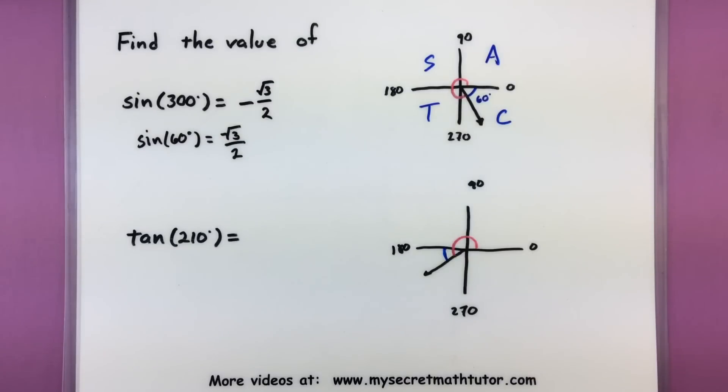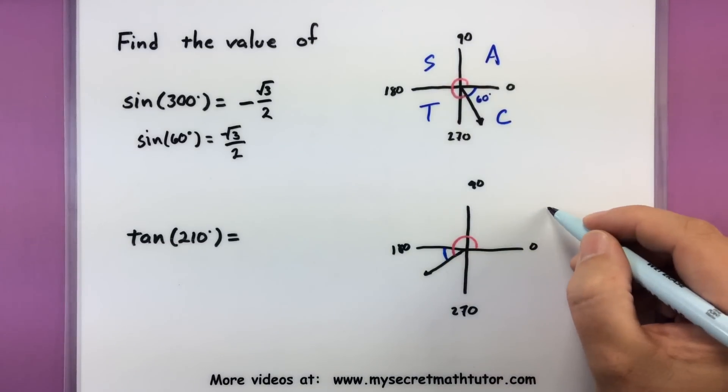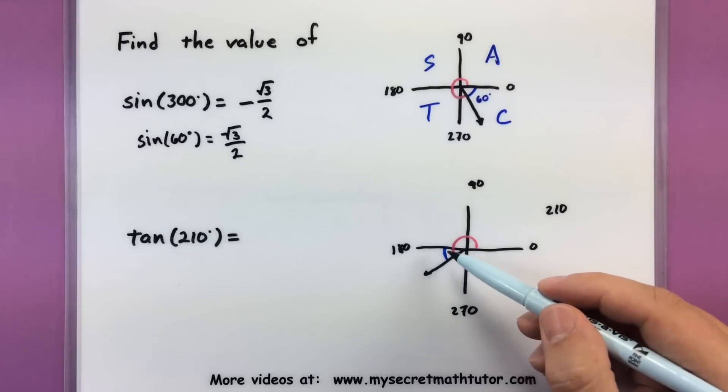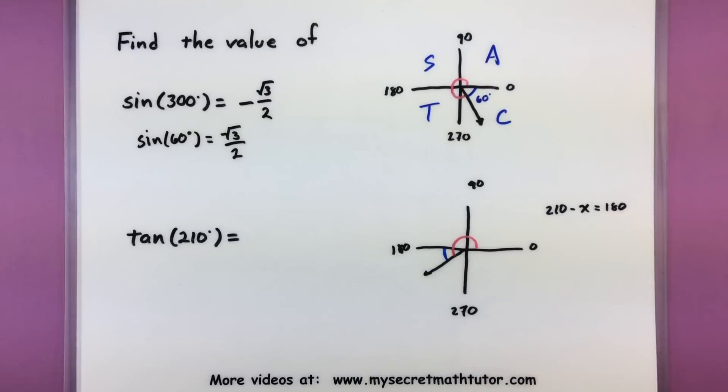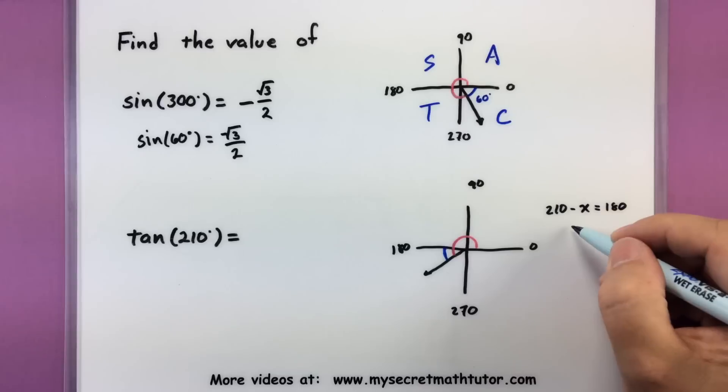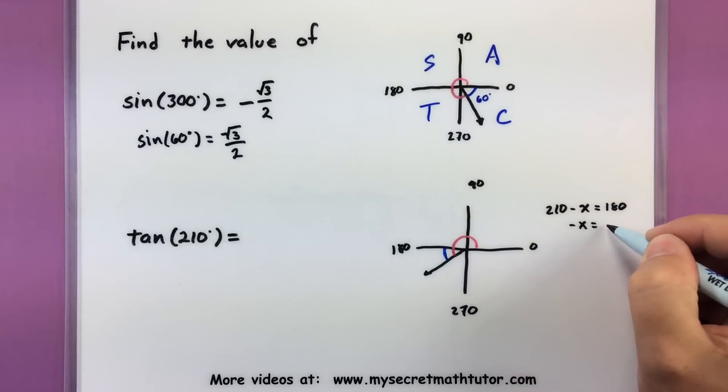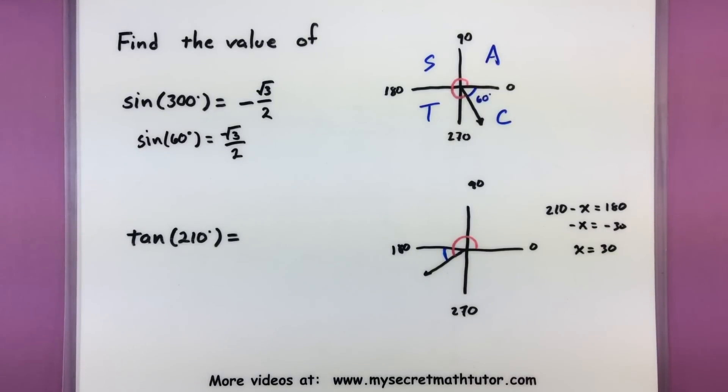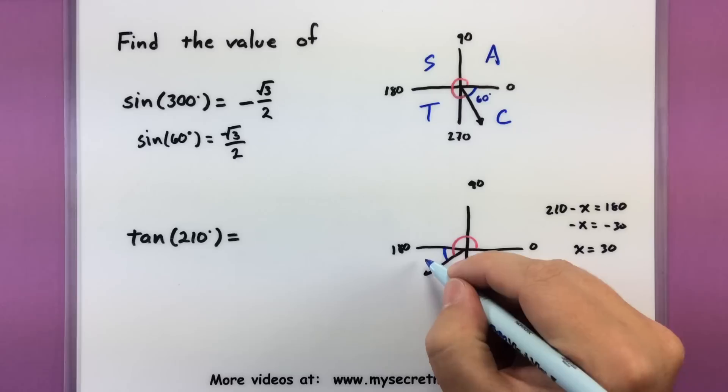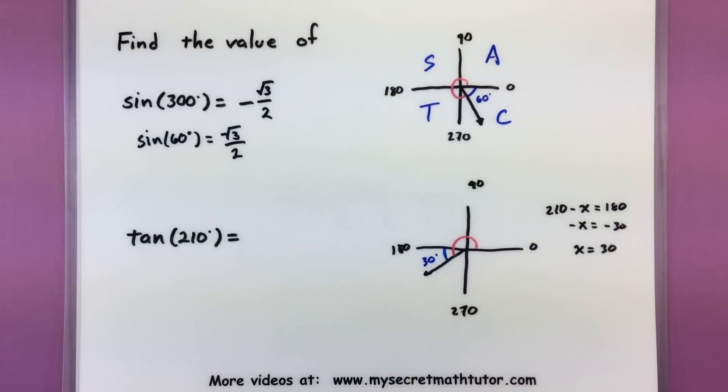I can see that we went 210 degrees, but we're going back just a little bit in order to get to that 180. So 210 minus what is equal to 180 degrees? Well, that's not so bad. We can solve that. We'll get a negative 30. Multiply both sides by the negative. So I see that my reference angle is just 30 degrees. All right, we have our reference angle.